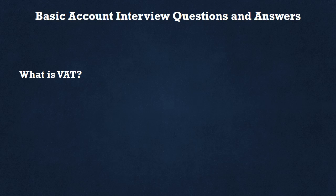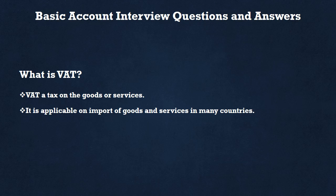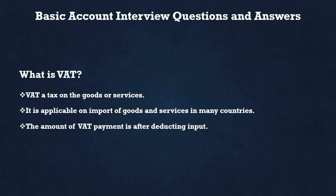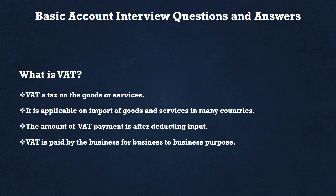Next question: what is VAT? VAT is a tax on goods and services. It is applicable on the supply of goods and services in many countries. The amount of VAT payment is calculated after deducting input VAT. The formula is: Input VAT minus Output VAT — the difference is what we pay to the government. VAT is paid by businesses for business-to-business purposes.